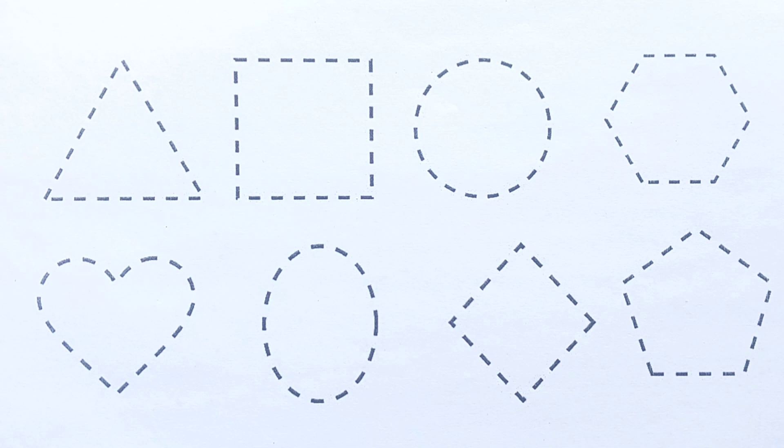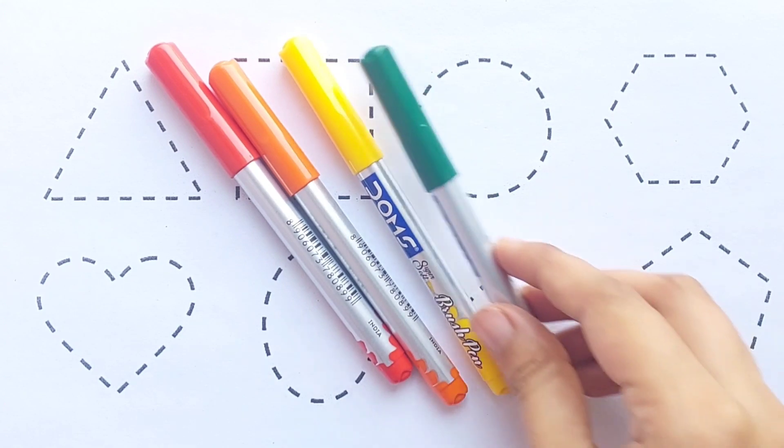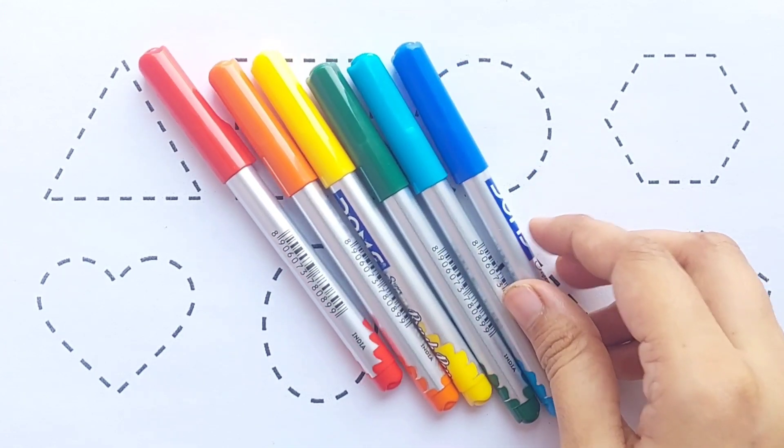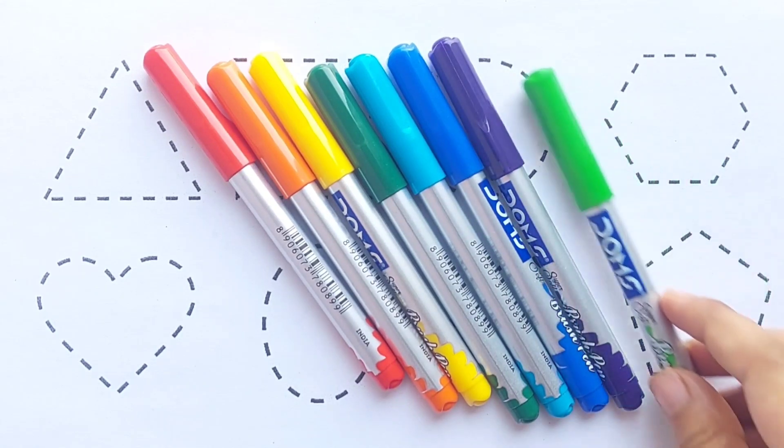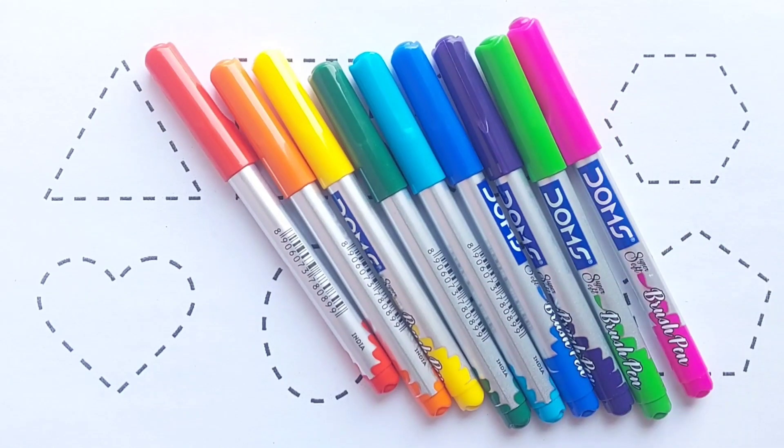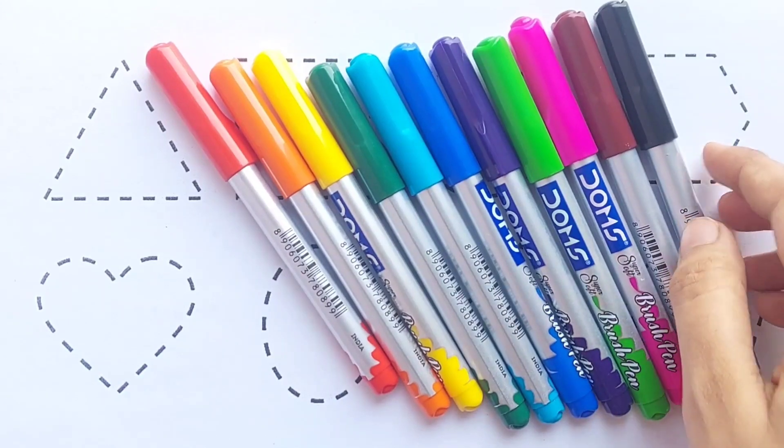Hello kids, let's learn how to draw shapes and colors. Name: red color, orange color, yellow color, green color, sky blue color, blue color, purple color, light green color, pink color, brown color, black color.